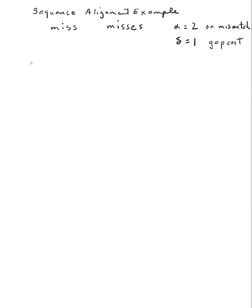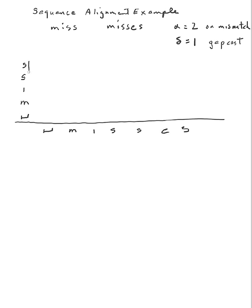Let me start by creating my 2D matrix, with 'miss' along the side and 'misses' along the top. Let's go ahead and make our grid.